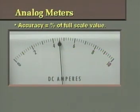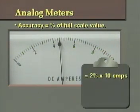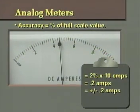Since we said the accuracy for d'Arsonval movements is usually 2 percent, that means 2 percent of the full-scale reading, which for this meter is 10 amps. 2 percent of 10 equals 0.2, which means the accuracy of any reading on this scale would be plus or minus 0.2 amps.